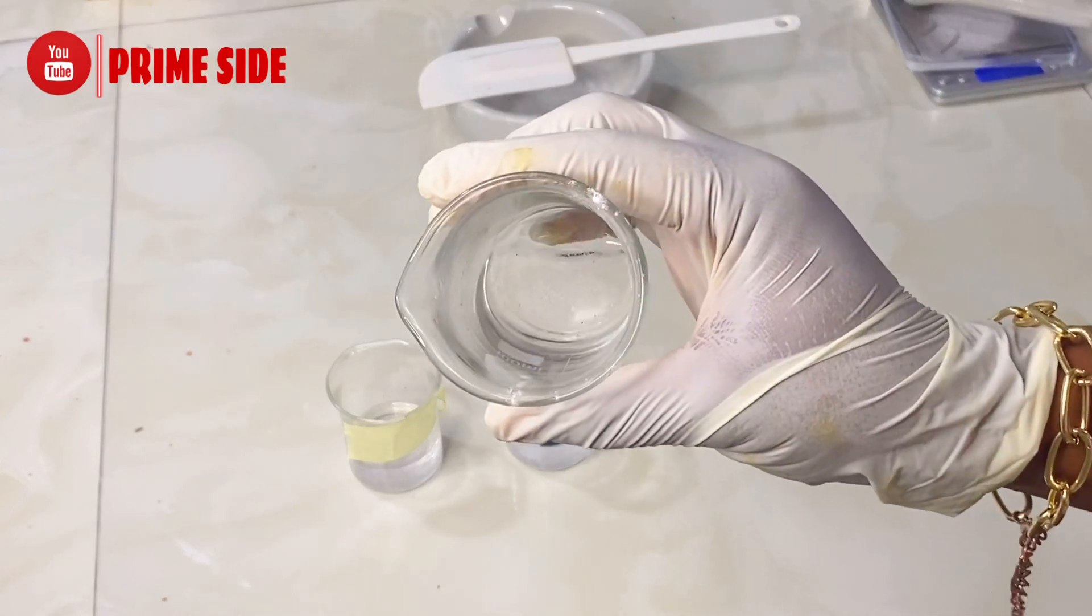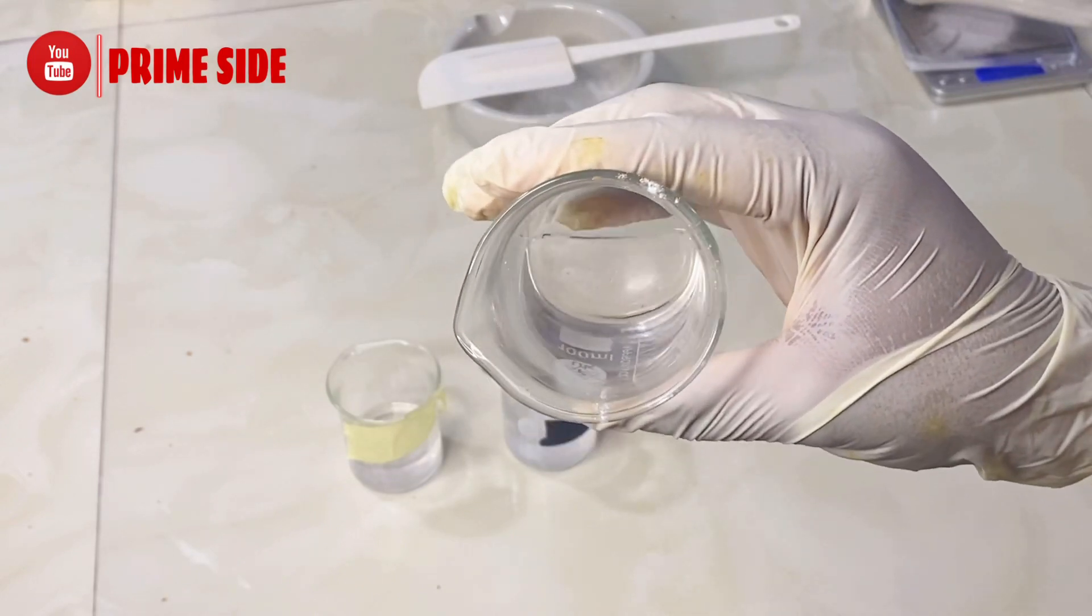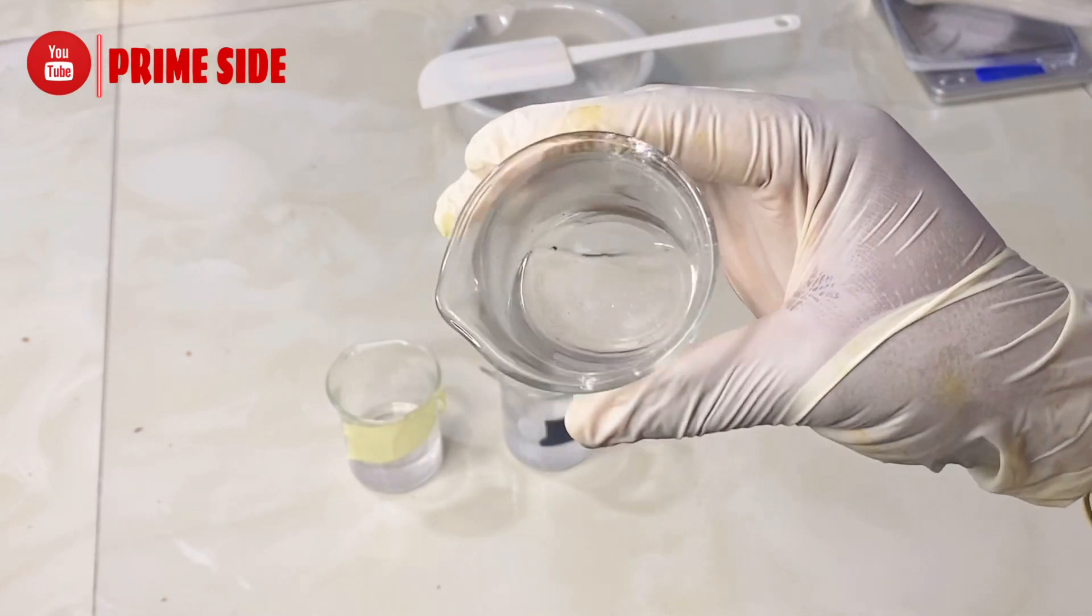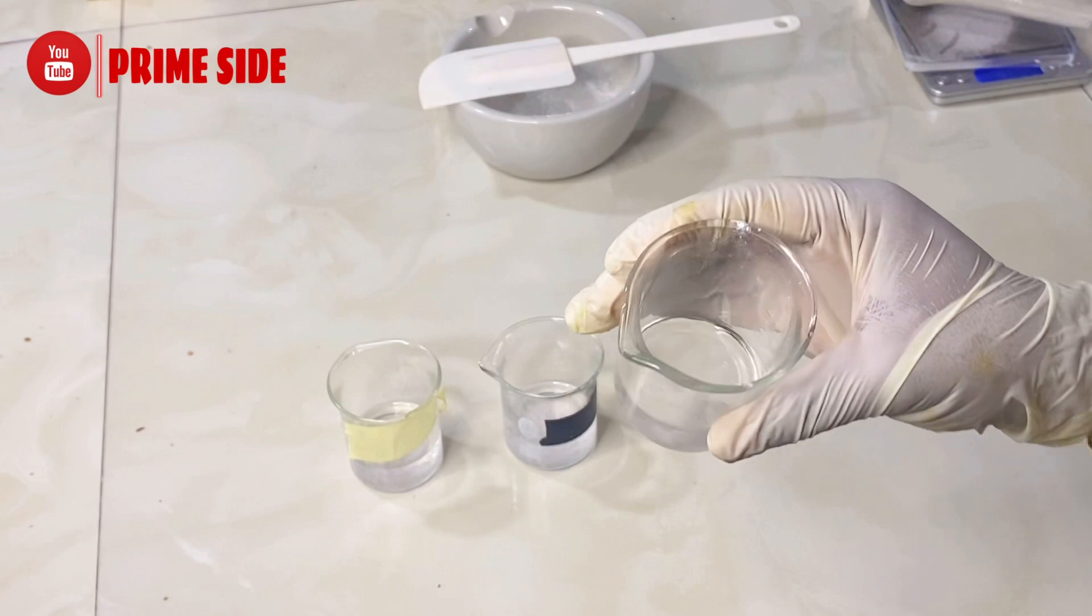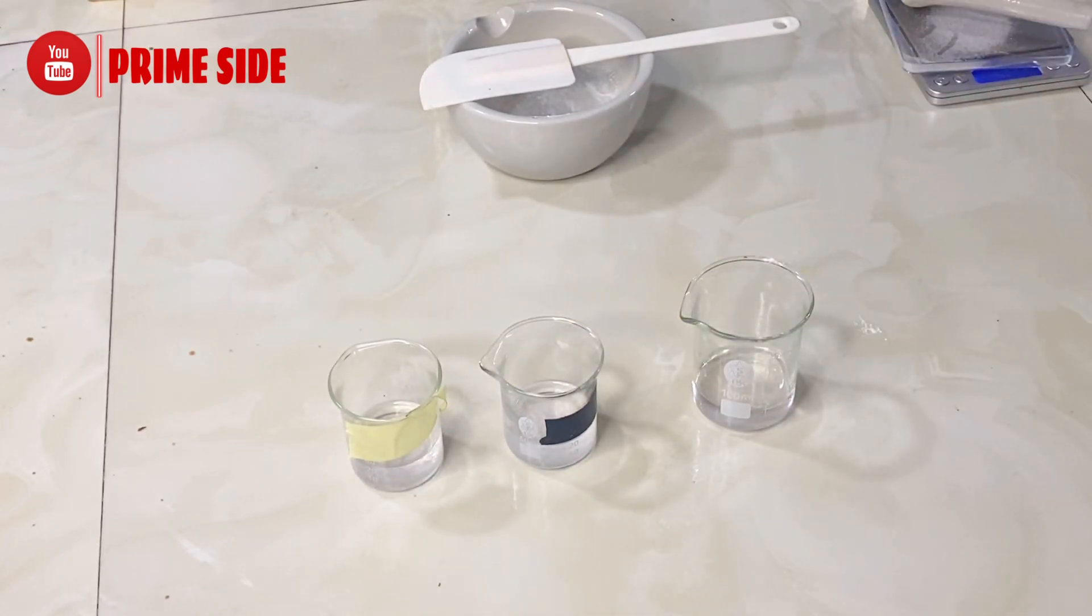This is a solution of salicylic acid with propanediol 1,3, and as you can see there are still crystals. And this is grounded salicylic acid with propylene glycol. As you can see, the crystals are very little and this is almost dissolved.